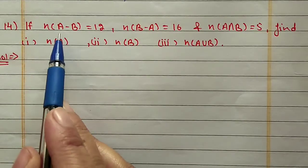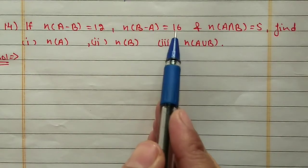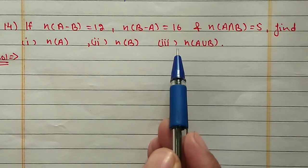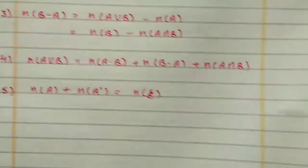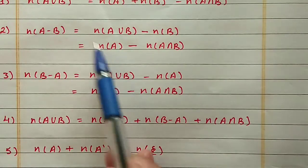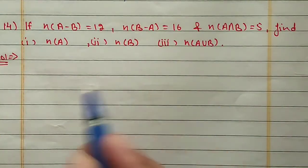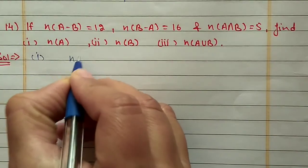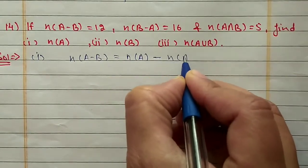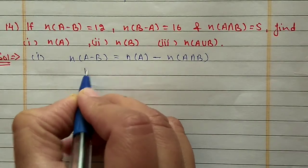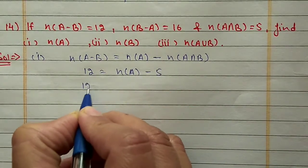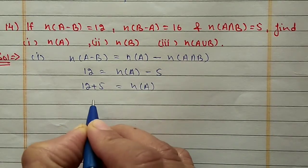Question 14: N(A - B) = 12, N(B - A) = 16, N(A∩B) = 5. Find N(A), N(B), and N(A∪B). To find N(A) we use the property N(A - B) = N(A) - N(A∩B). N(A - B) is 12 and N(A∩B) is 5, so shifting 5 to the other side: N(A) = 12 + 5 = 17.